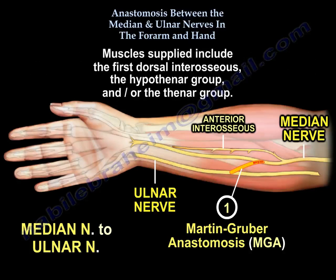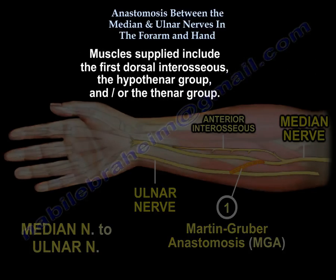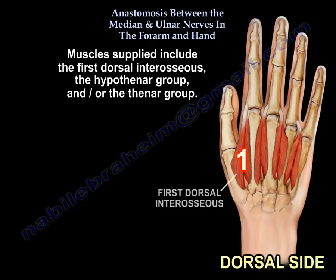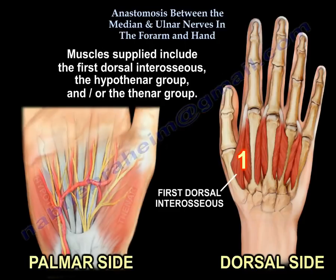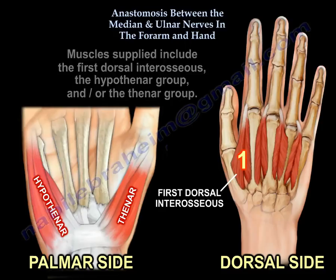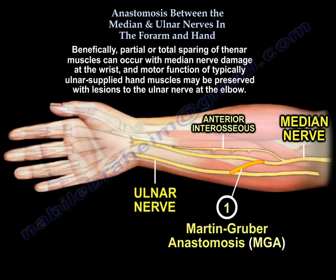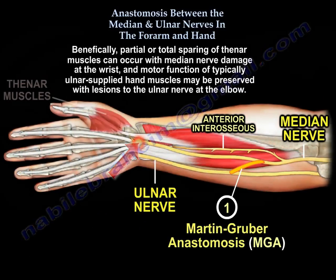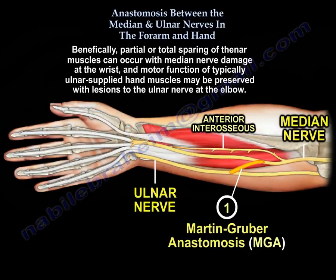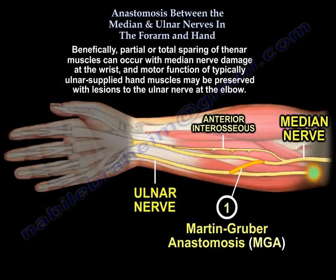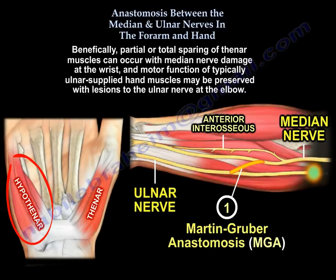Muscles supplied include the first dorsal interosseous, the hypothenar group, and/or the thenar group. Beneficially, partial or total sparing of the anterior muscles can occur with median nerve damage at the wrist. Additionally, motor function of typically ulnar-supplied hand muscles may be preserved with lesions to the ulnar nerve at the elbow.